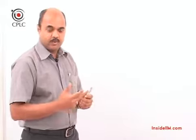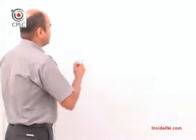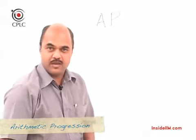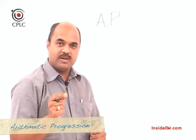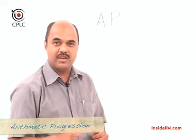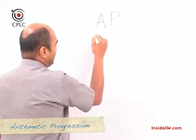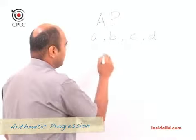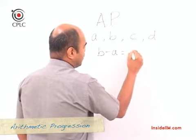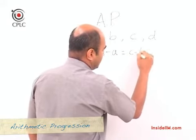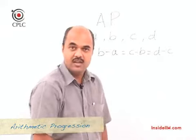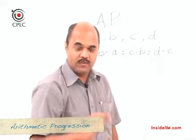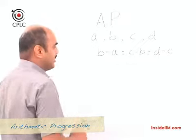Let's look at the first type of progression, called arithmetic progression or AP. The characteristic of an arithmetic progression is that the difference between any two consecutive terms remains the same. So if we have terms A, B, C, D in arithmetic progression, then B minus A equals C minus B, which equals D minus C — the difference between any two consecutive terms always remains the same.